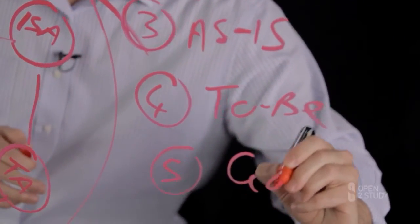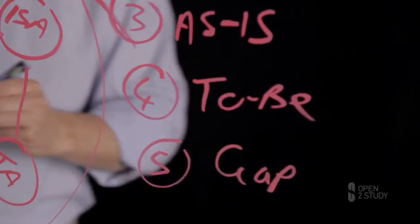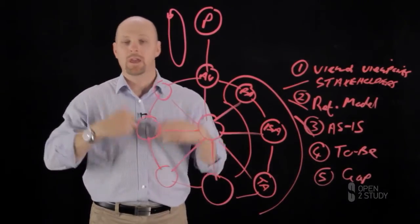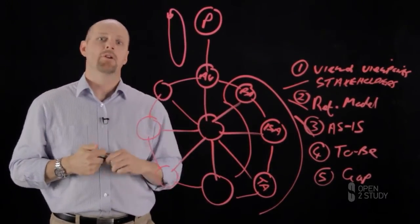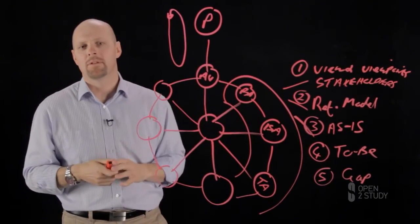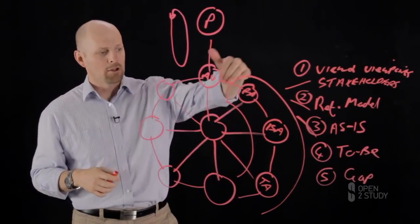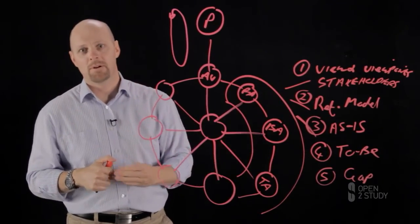And then number five, we're looking at the gap. And in effect, there's some administrative stuff which could occur after that, which is you're checking it with the business and you're ratifying it and those types of things. But if you just remember those five steps, those are the repeatable steps that are going to be occurring across the architecture development iteration.